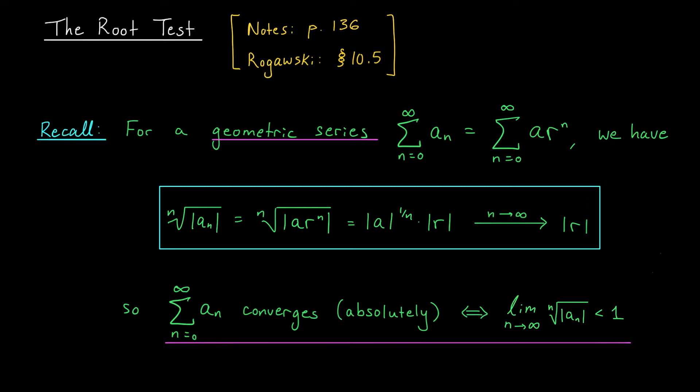This means I can think of |r| as the limit as n tends to infinity of the nth root of |aₙ|. Based on geometric series, if this limit is less than 1, the series converges absolutely. If this limit is greater than or equal to 1, the series diverges. This is the key idea behind the root test. We're going to take this equivalence, which holds for geometric series, and extend it to more general series.